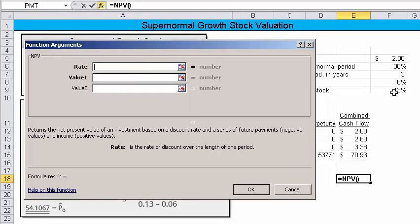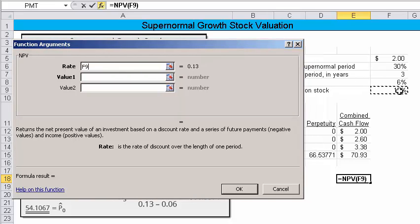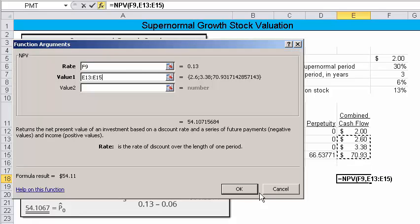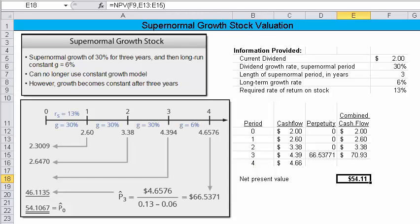And I start giving it the parameters it needs or the variables. So right there is our required rate of return. And I'm going to go to the value one. And I'm going to say, give me the cash flow we expect, which is from period one through three. I close that out. And I get 54.11, which matches our example. And that would be the net present value of this supernormal growth stock using Excel to solve it for us.